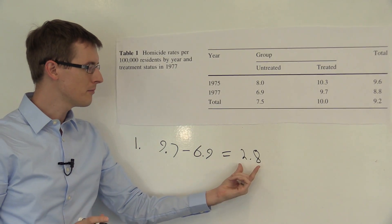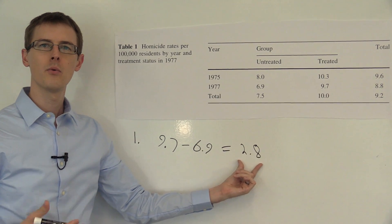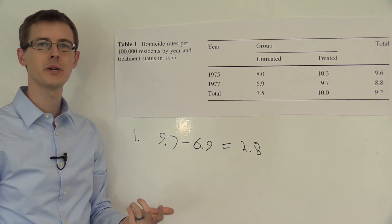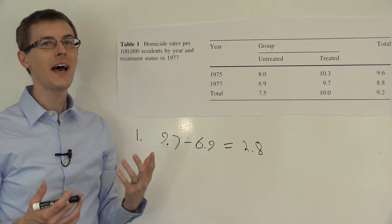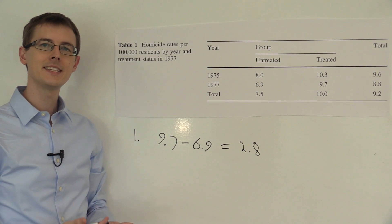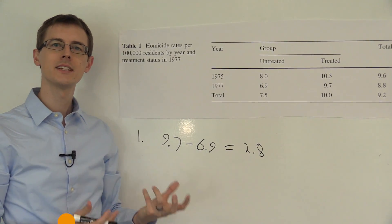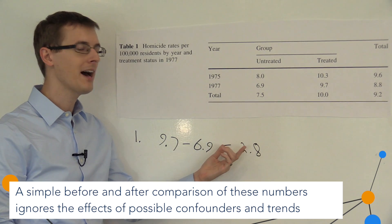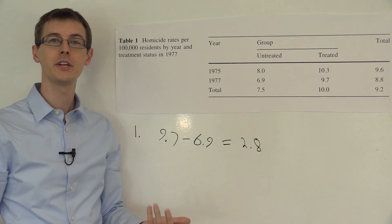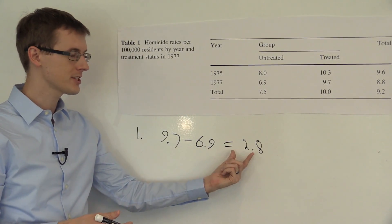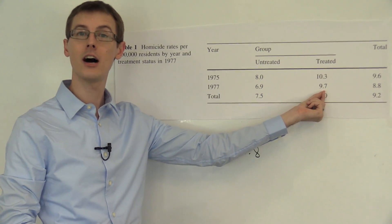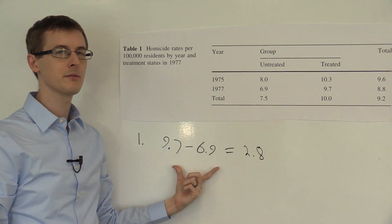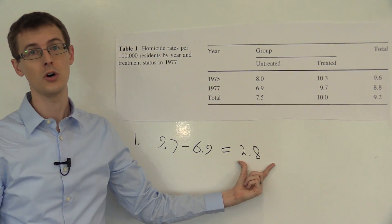But hold on. If we're going to believe that this is a true causal effect, what assumptions do we need? We need that the death penalty is randomly assigned to states — that there's no systematic difference between states that have the death penalty and states that don't. But that assumption probably isn't true. Maybe these states passed the death penalty precisely because they thought they were going to have high homicide rates, and they passed it to try to lower them. That would cause a correlation just like this, where states with the death penalty have higher homicide rates. So this contemporaneous comparison — probably we don't believe it.